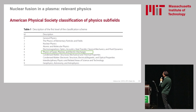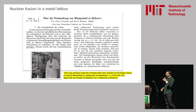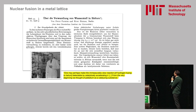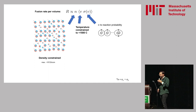Here is a table showing the nine subfields of physics according to the American Physical Society, with plasma physics highlighted as the subfield most closely associated with fusion. From the early days, people have thought about whether a metal lattice could be helpful in bringing together nuclei and catalyzing nuclear fusion. An early paper from 1926 in Naturwissenschaften — later published in Nature — articulated the idea of using a palladium lattice, by the chemist Fritz Panneth based in Berlin.